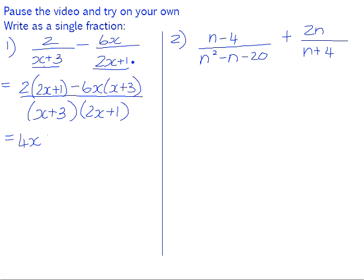If we simplify: 2 times 2x is 4x, 2 times 1 is 2, minus 6x squared, minus 18x, all over (x+3)(2x+1).